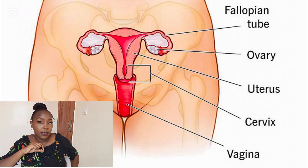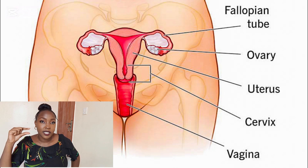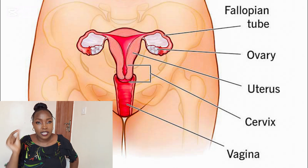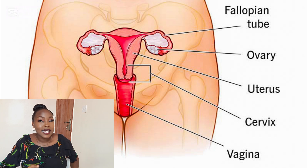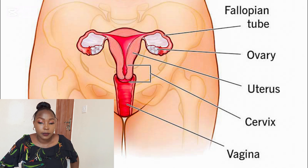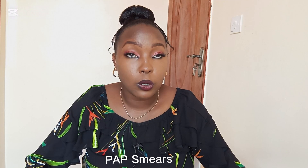Next, we have the cervix. The cervix is the lower portion of the uterus, around two to three centimeters long. It has an opening called the cervical opening, which opens to around 10 centimeters during childbirth. We are going to talk more about the cervix in a future episode to understand why women are advised to go for pap smears to detect cervical cancer.